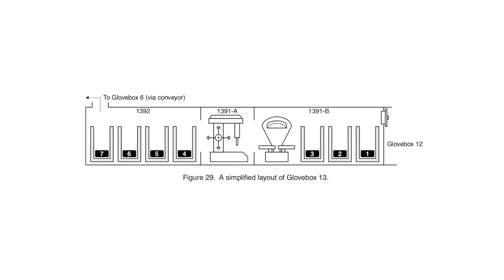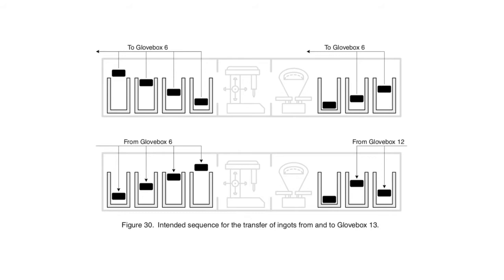On December 13th, 1978, sample analysis had been completed for every ingot in glove box 13 except for ingot number 3, and so these other six ingots were to be transferred to glove box number 6 for further use. After they were transferred, ingots were to be transferred back into glove box 13 from glove boxes 6 and 12. The operator, who we'll call operator A, started this process by transferring ingots 6 and 7 out to glove box 6, after which he transferred in ingots 8 and 9 from glove box 6.